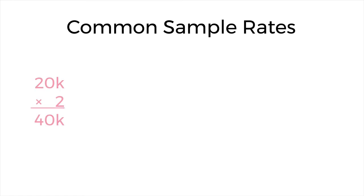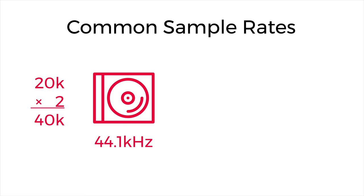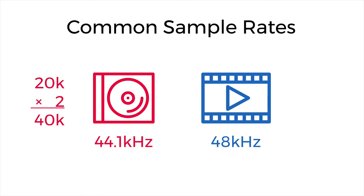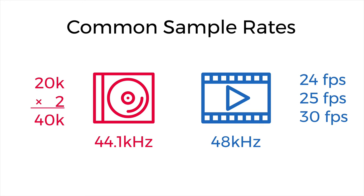Notice that sample rate actually uses the same measurement as audio frequency — we measure audio frequency in hertz, and we also measure sample rates in hertz. The standard sample rate for CD quality audio is 44.1 kilohertz — 20 kilohertz doubled, plus some wiggle room, which we need to account for phasing and other real-world issues. If you do much work with film or video, you might also see a lot of 48 kilohertz sample rates, because 48,000 is an even multiple of the most common frame rates: 24, 25, and 30 frames per second.